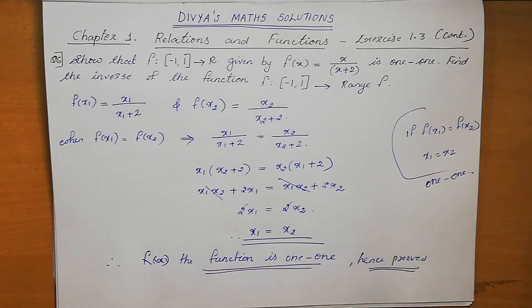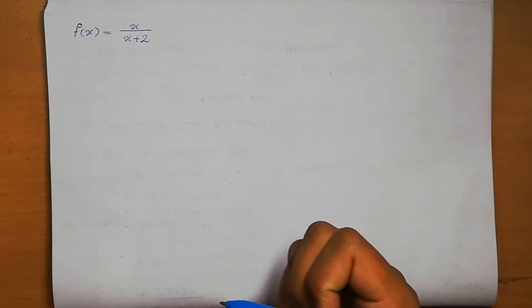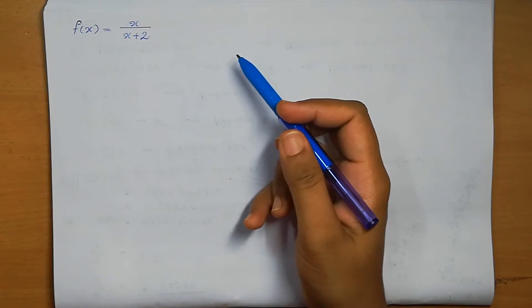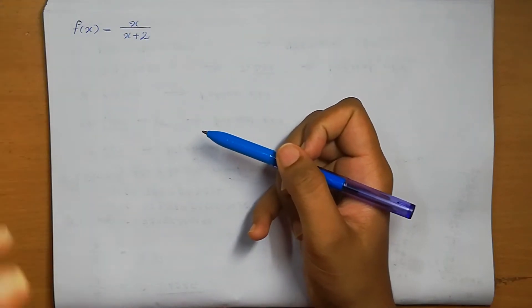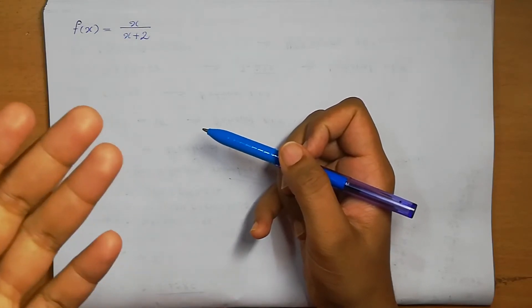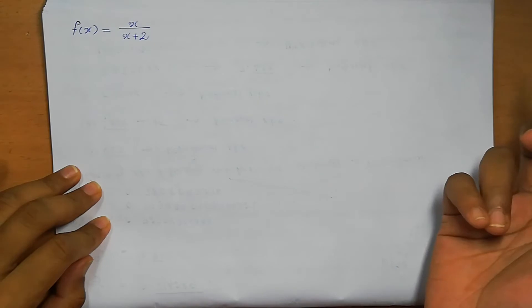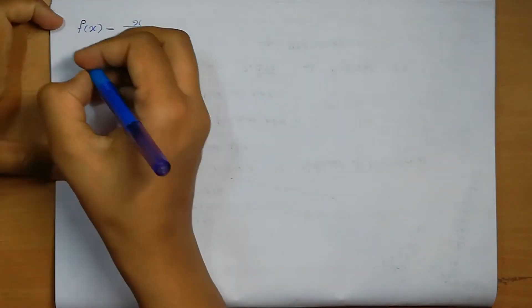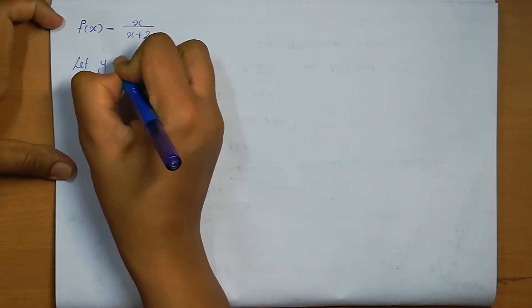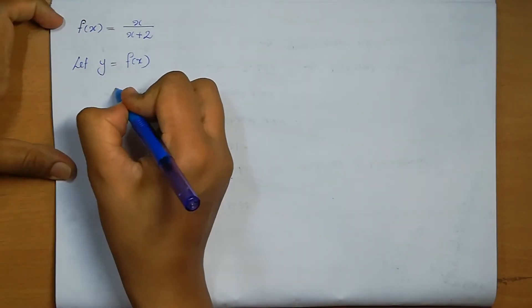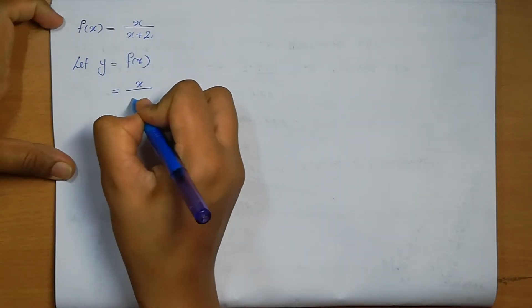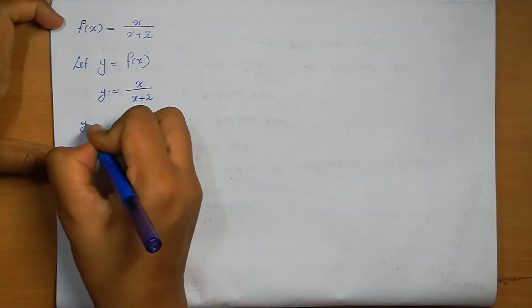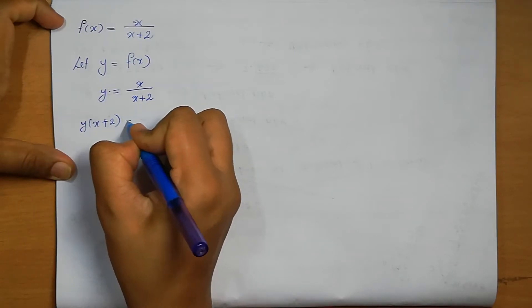This is the first part of the question. Next, we need to find the inverse of the function from (-1,1) to the range of f. To find the inverse, we need to show the function is both 1-to-1 and onto. For onto, let y = f(x), so y = x/(x+2). We can simplify: y(x+2) = x.